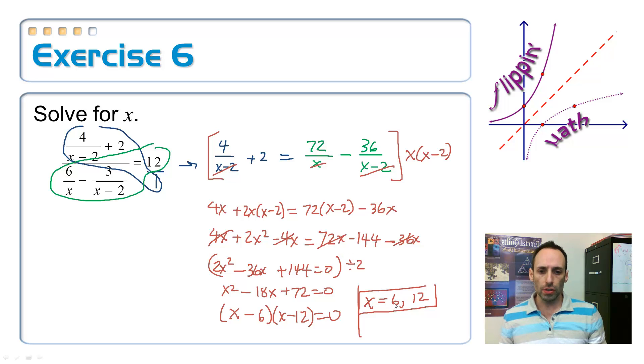Factor that thing, and you get the two answers, 6 and 12. Looking back, 6 and 12, neither one of those is going to make those fractions undefined. So, we're in good shape. All right.